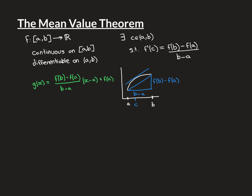The proof of this theorem is extremely simple using Rolle's Theorem. We're going to turn our function f into something we can apply Rolle's Theorem to, by creating another function g on the interval [a, b] and subtracting it from f. The function g is going to be cleverly chosen — it will be the secant line connecting the point (a, f(a)) to (b, f(b)). We create a linear function with that secant line as its graph.